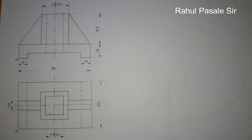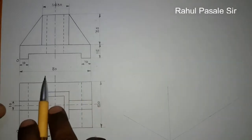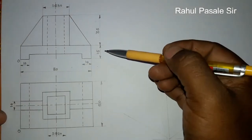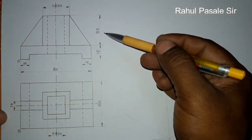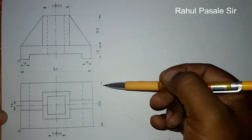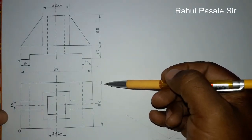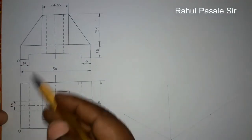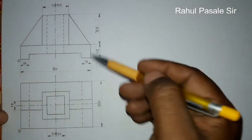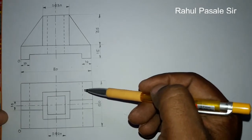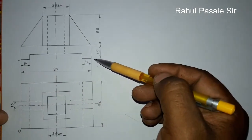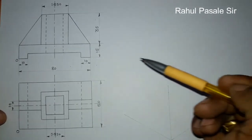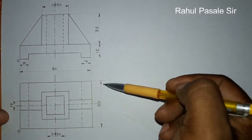Hello students, today we are going to draw an isometric projection for this component. This component has a length equal to 80mm, a height of 15 plus 35, that is 50mm, and a width of 50mm. In this component, I located O here — you can also locate O here because this component is symmetrical, so you can place O at various positions.